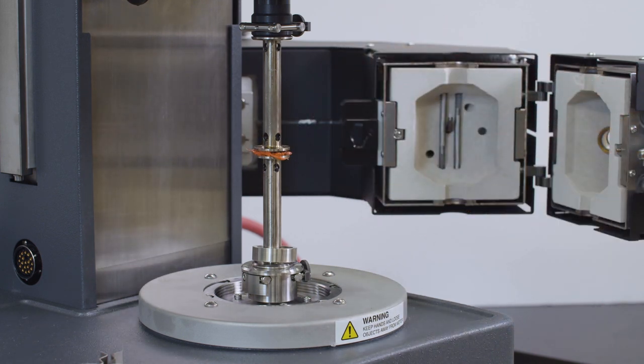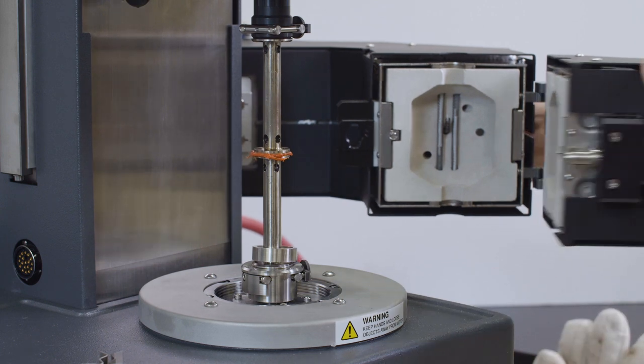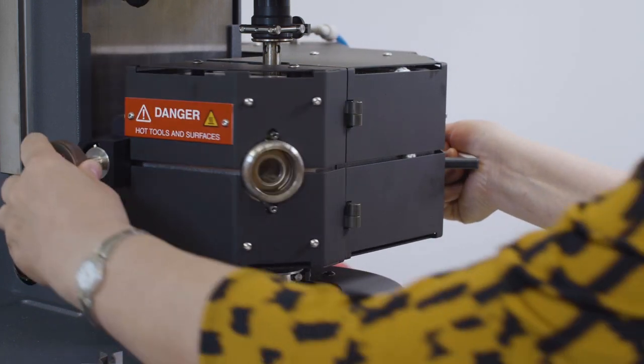Slightly lower the upper geometry until it squeezes the pellet further down. Close the oven immediately.